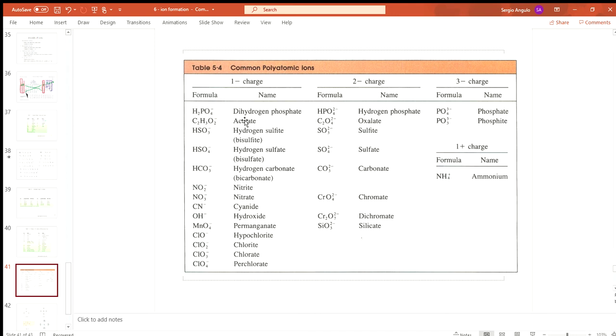Each polyatomic ion has a formula that shows the grouping of elements. They all have one charge, and that one charge is for the whole group. Then they have a name.